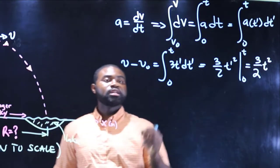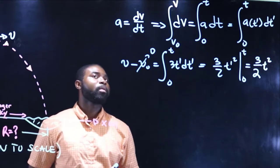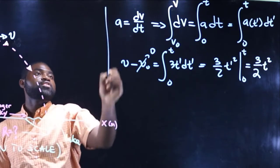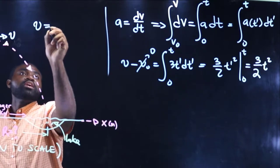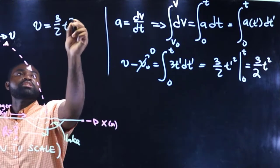And this is just going to be equal to 3 over 2 t squared. But because the object initially starts from rest, this is 0, so we can clearly see that v is equal to 3 over 2 t squared.